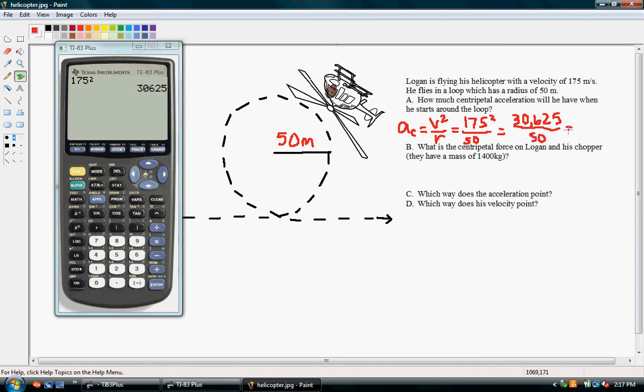So, to find the acceleration, we're going to divide this by 50, and we get 612.5. So, he's traveling with a centripetal acceleration of 612.5 meters per second squared.